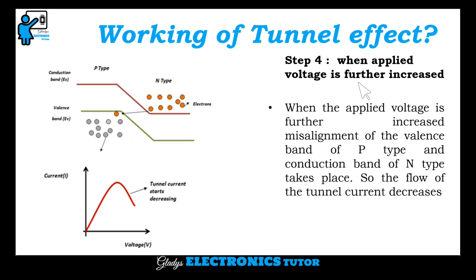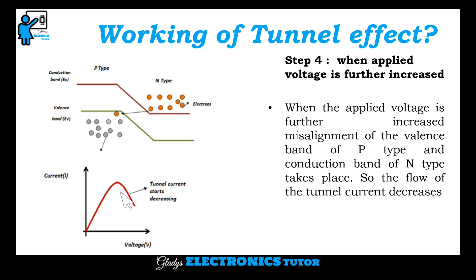Step 4 is when applied voltage is further increased. When applied voltage is further increased, misalignment of the valence band of P type and the conduction band of N type takes place. So the flow of tunnel current decreases.